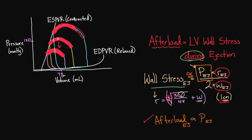That's how most people figure out afterload. They assume that pressure and afterload are proportional to one another. Even though technically the mathematical formula includes other variables like radius and wall thickness, most people just eyeball the pressure and say, yes, that's a higher afterload.